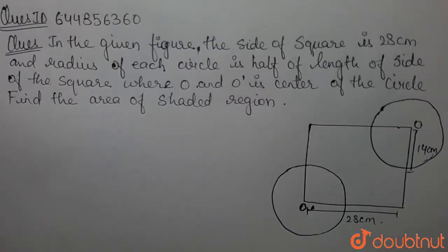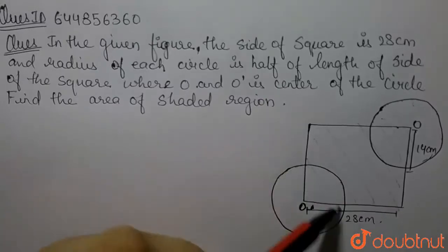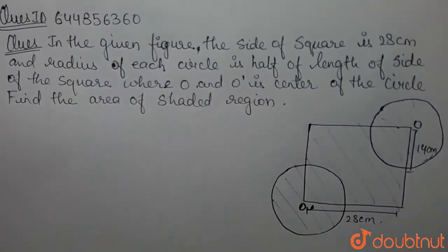In the given figure, the side of the square is 28 centimeters and the radius of each circle is half of the length of the side of the square, where O and O dash are the centers of the circles. Find the area of the shaded portion.